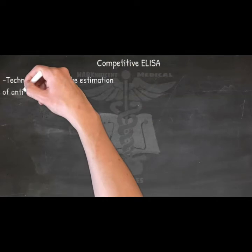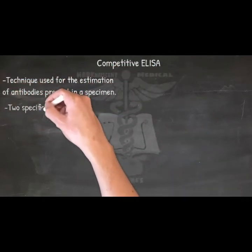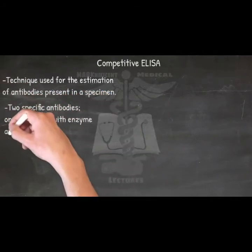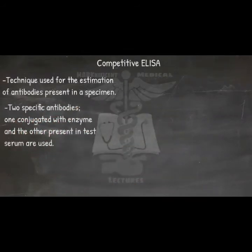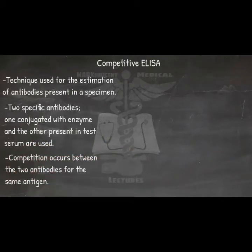Competitive ELISA. Competitive ELISA is another technique used for the estimation of antibodies present in a specimen, such as serum. The principle of the test is that two specific antibodies — one conjugated with enzyme and the other present in the test serum (if serum is positive for antibodies) — are used. Competition occurs between the two antibodies for the same antigen. Appearance of color indicates a negative test (absence of antibodies), while absence of color indicates a positive test (presence of antibodies).